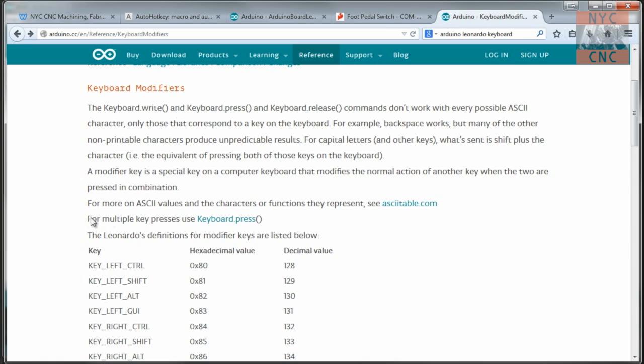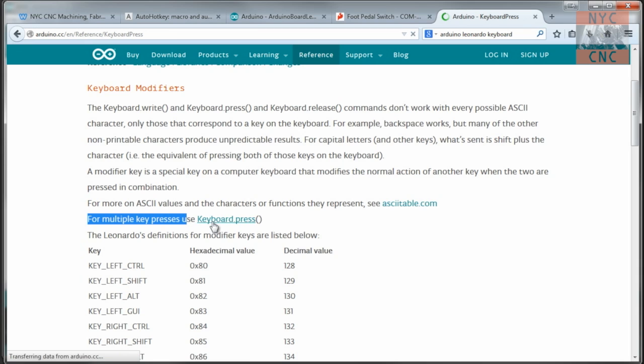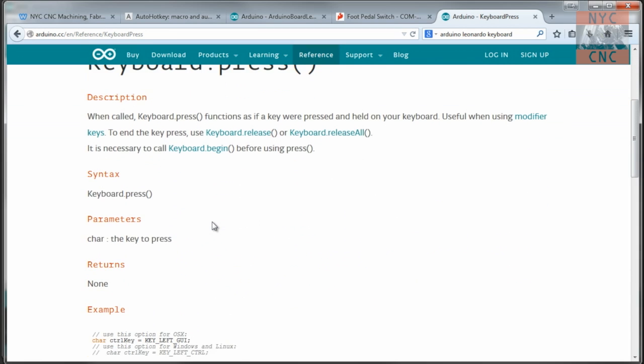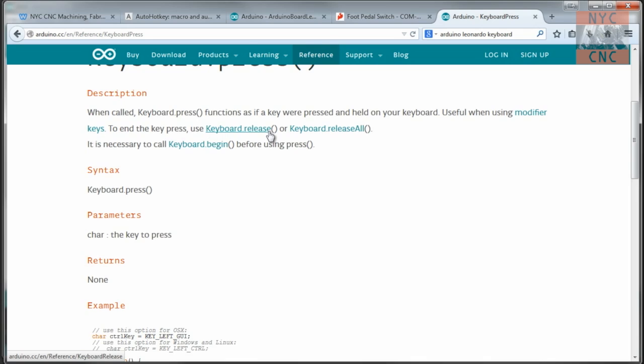I also noticed for multiple key presses, use keyboard dot press. And that's exactly what we want. Because we don't want to type individual characters. We want to send three at once, kind of like when you do control alt delete. And you do that by doing keyboard dot begin and keyboard release when you're done. We define our control key and our alt key per those parameters we just saw. That just stores our foot pedal state. We do our keyboard begin in the setup.